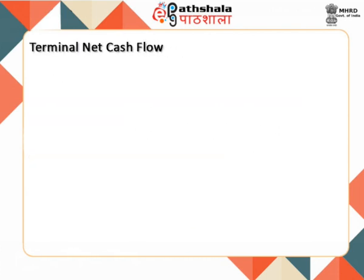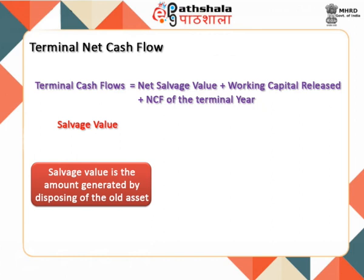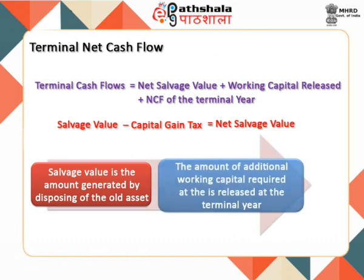The next step is to calculate the terminal net cash flows. It can be computed by adding the net salvage value and the amount of working capital released to the NCF of the terminal year. Salvage value is the amount generated by disposing of the old assets at the end of their productive life. The tax on capital gain is computed by comparing the salvage value with the book value. This tax is then deducted from the salvage value to arrive at the net salvage value. The amount of additional working capital required at the beginning of the project or in subsequent years is assumed to be released at the terminal year due to the disposal of the old asset.